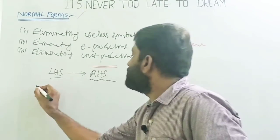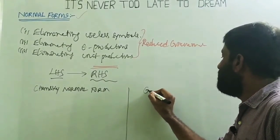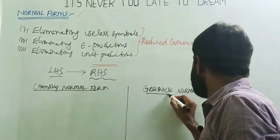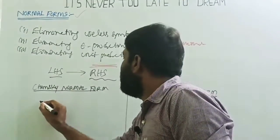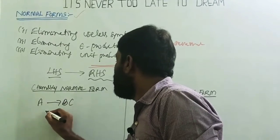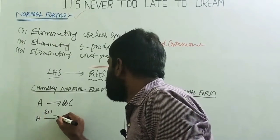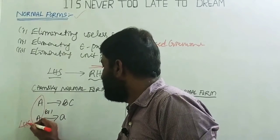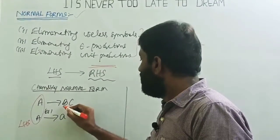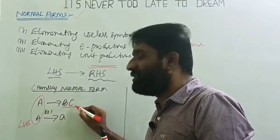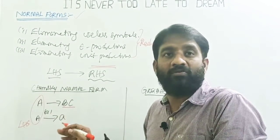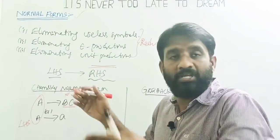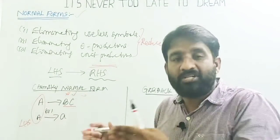Generally, normal forms are of two categories: first is the Chomsky Normal Form (CNF), and second is the Greibach Normal Form (GNF). The format of CNF is: A → BC, or A → a. The LHS contains exactly a single non-terminal. In CNF, the RHS is restricted to contain exactly two non-terminals only — not one, not more than two.